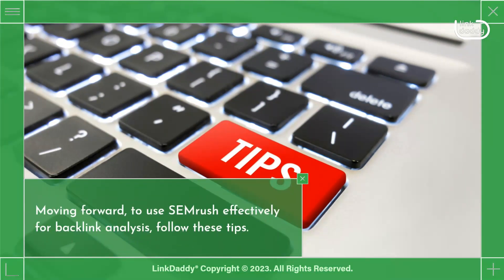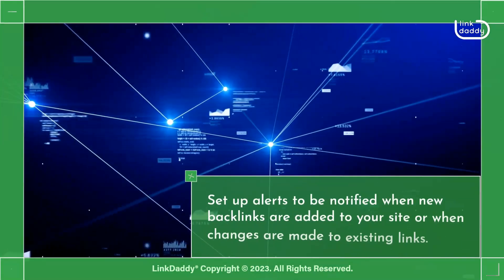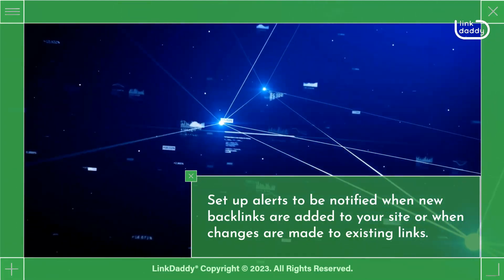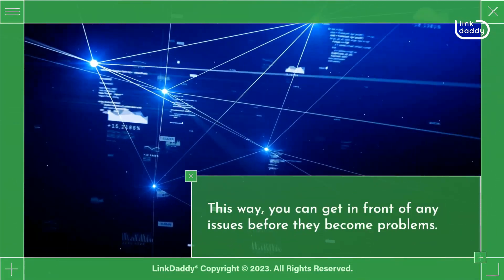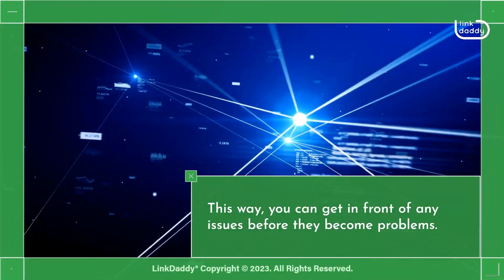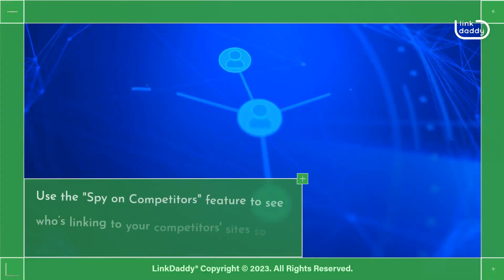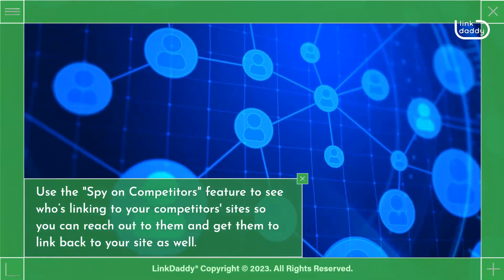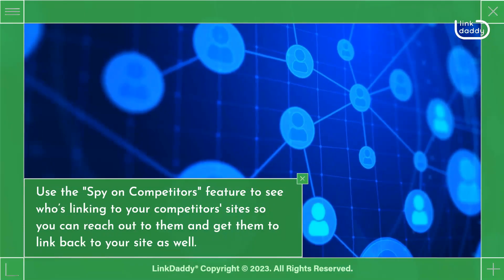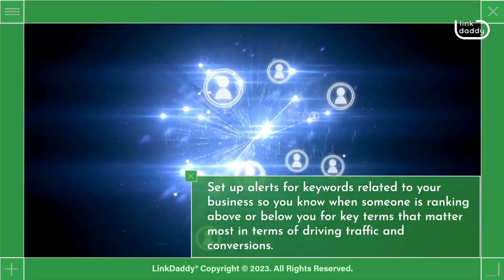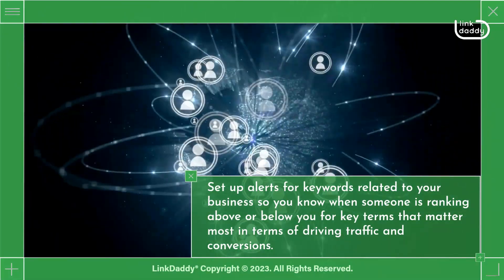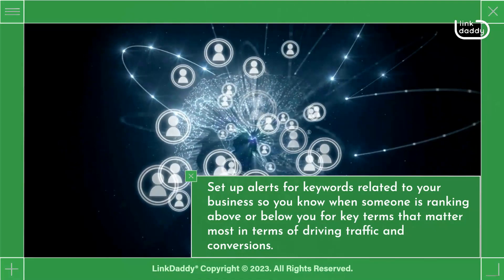Moving forward, to use SEMrush effectively for backlink analysis, follow these tips. Set up alerts to be notified when new backlinks are added to your site or when changes are made to existing links. This way, you can get in front of any issues before they become problems. Use the 'spy on competitors' feature to see who's linking to your competitors' sites so you can reach out to them and get them to link back to your site as well. Set up alerts for keywords related to your business so you know when someone is ranking above or below you for key terms that matter most in terms of driving traffic and conversions.